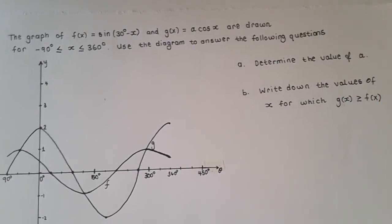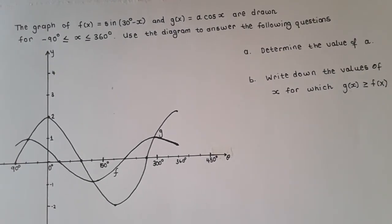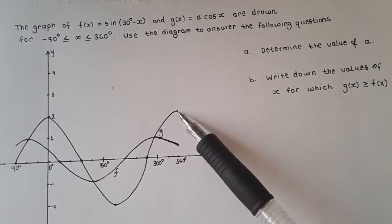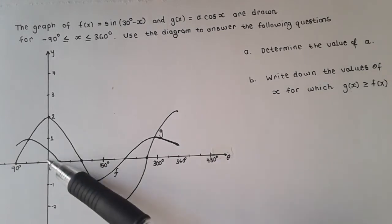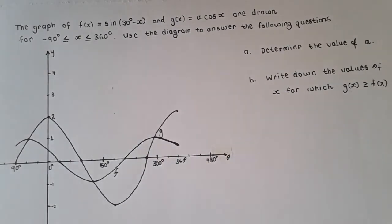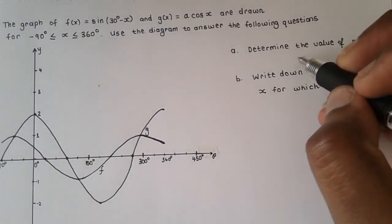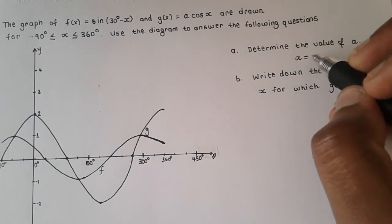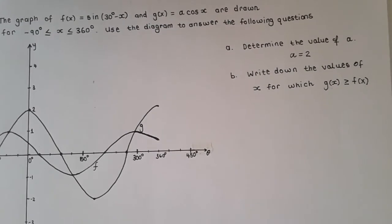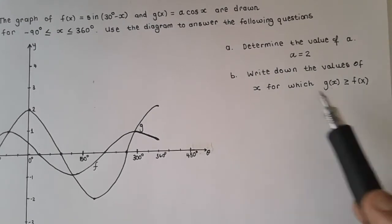For the first question, determine the value of a: we go to the function and see that a is in front of the trig function, which means it represents the amplitude. So we go to the diagram, and we can see that the distance from the x-axis to the highest point of g(x) is 2. Therefore, a equals 2.